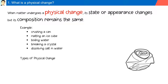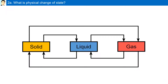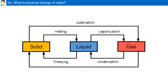Types of physical change include state, appearance, shape, and size. Physical changes of state include melting, vaporization, sublimation, condensation, freezing, and deposition.